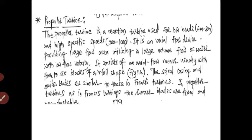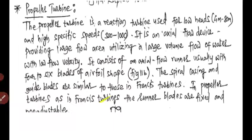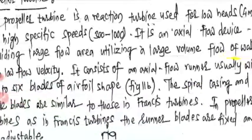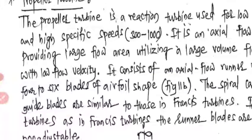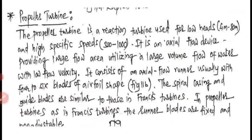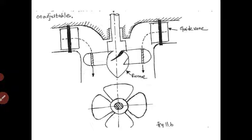The propeller turbine is a reaction turbine used for low heads of 4 to 80 meters and high specific speeds of 300 to 1000 rpm. It is an axial flow device providing a large flow area, utilizing a large volume flow of water with low flow velocity.